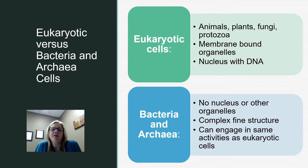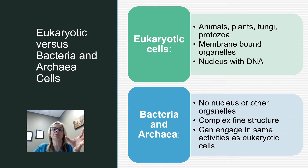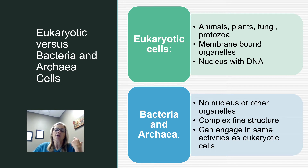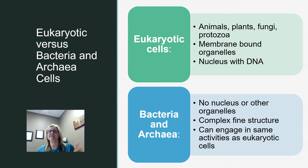Animals, plants, fungi, and protozoa are all made up of eukaryotic cells — true nucleus. These contain internal membrane-bound organelles that perform specific functions like growth, nutrition, or metabolism. The DNA is found in chromosomes, and they have ribosomes, Golgi apparatus, endoplasmic reticulum, vacuoles, and mitochondria. Bacteria and archaeal cells have no nucleus and no membrane-bound organelles, but they can still engage in the same functions or activities as eukaryotic cells.